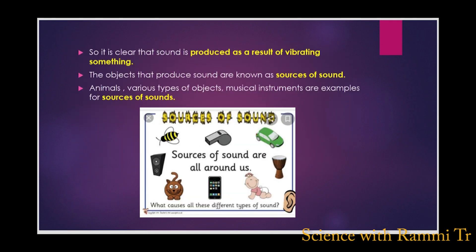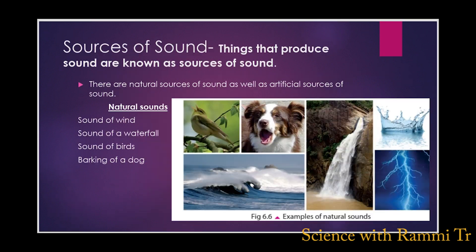The objects that produce sound are known as sources of sound. Sounds are two types: natural sounds and artificial sounds. Examples of natural sounds are sound of a waterfall, sound of sea waves, barking of a dog, and sound of thundering.